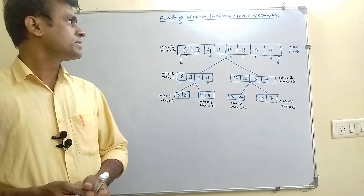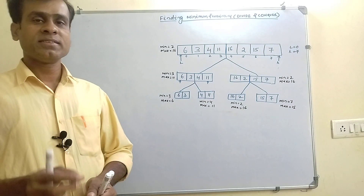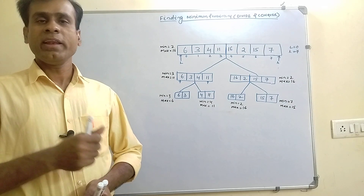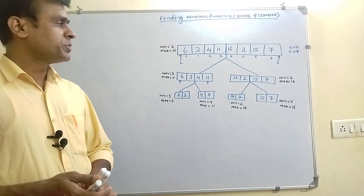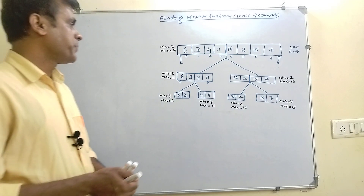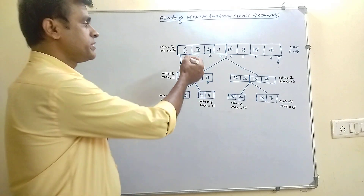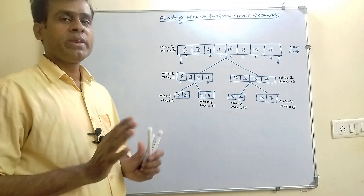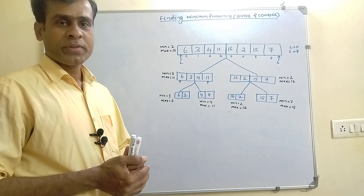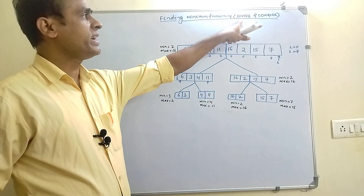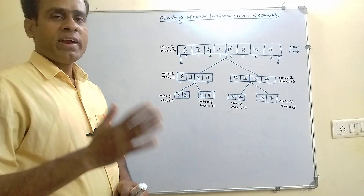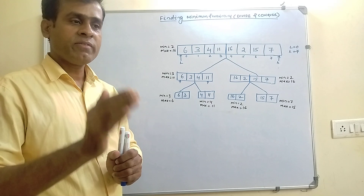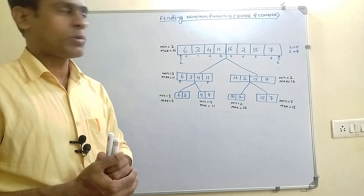Today we are going to discuss a new topic: finding the minimum and maximum element of an array of n elements. Suppose this is my array in which I have taken 8 elements starting from index 0 to 7, and I want to find out the minimum and maximum element using the principle of divide and conquer. Divide and conquer says that if it is a big problem, we have to divide it into a number of similar subproblems.